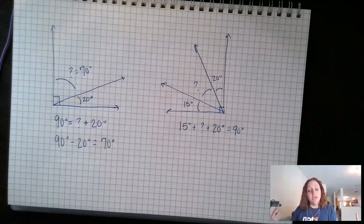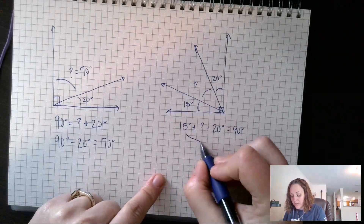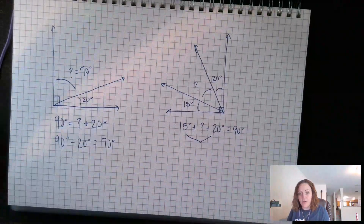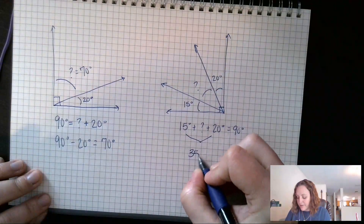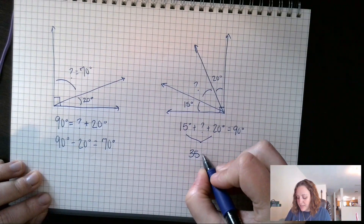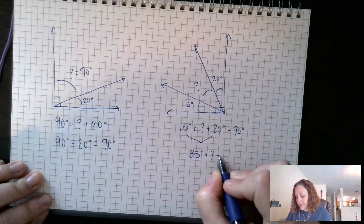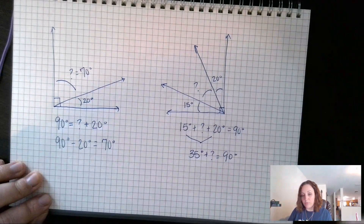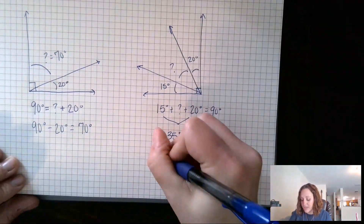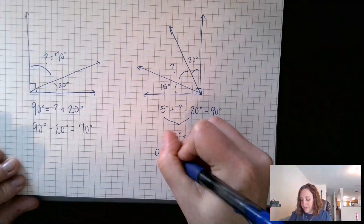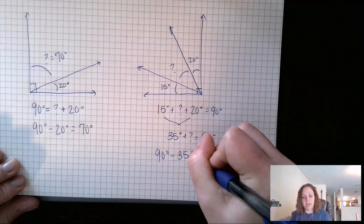So 15 plus something plus 20 equals 90 — if I add all those pieces together it equals 90 degrees. First I add what I know: 15 plus 20 is 35. So 35 degrees plus something equals 90 degrees. I'll use subtraction: 90 minus 35 will give me my unknown angle.